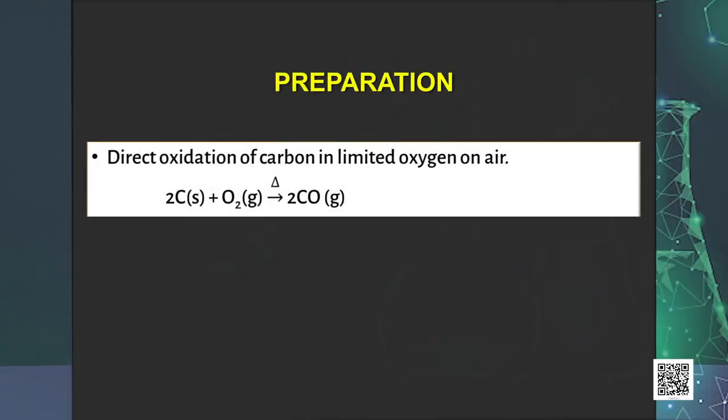Carbon monoxide can be prepared by direct oxidation of carbon in limited oxygen or air. The reaction involved is 2C plus O2 giving 2CO.